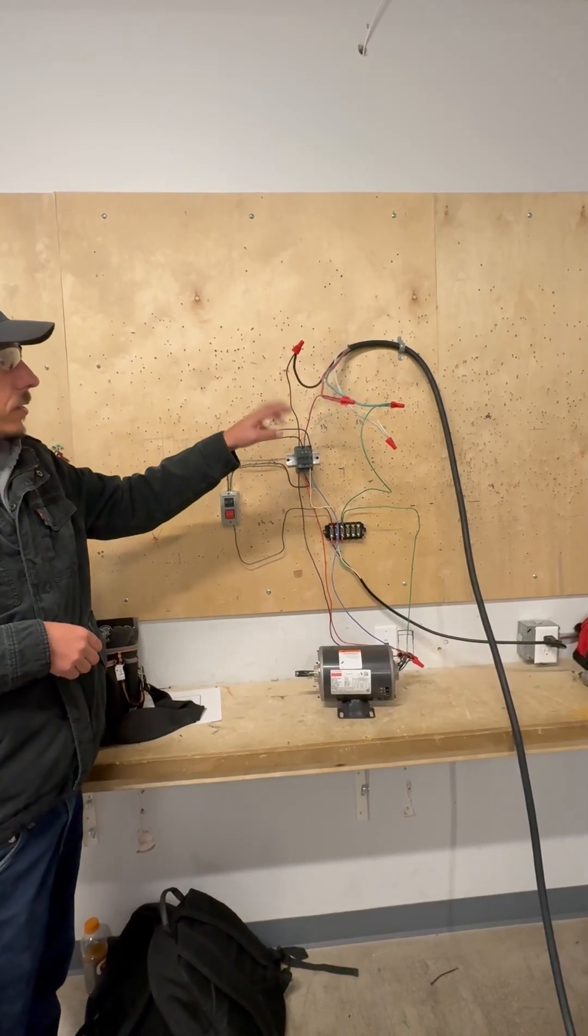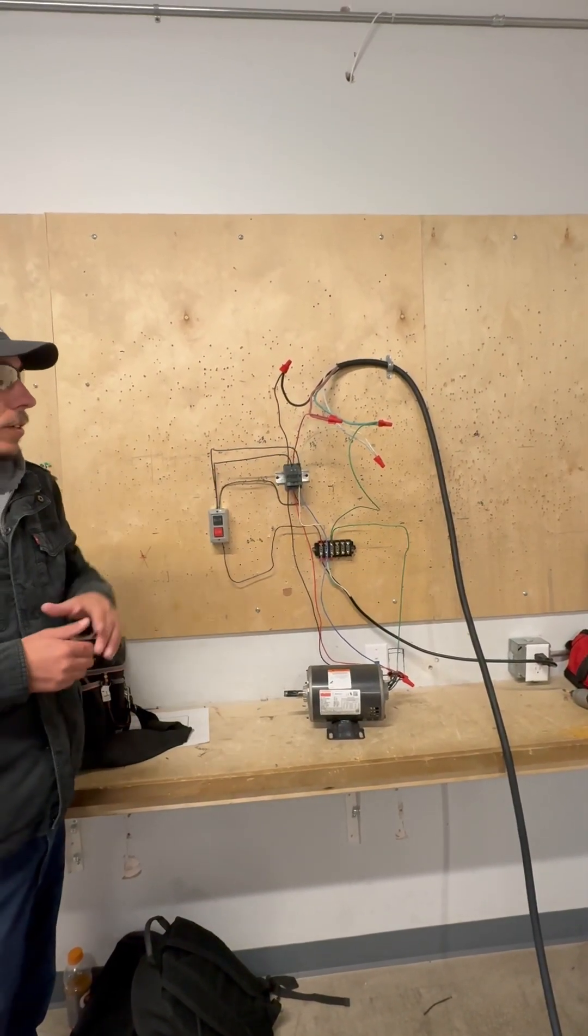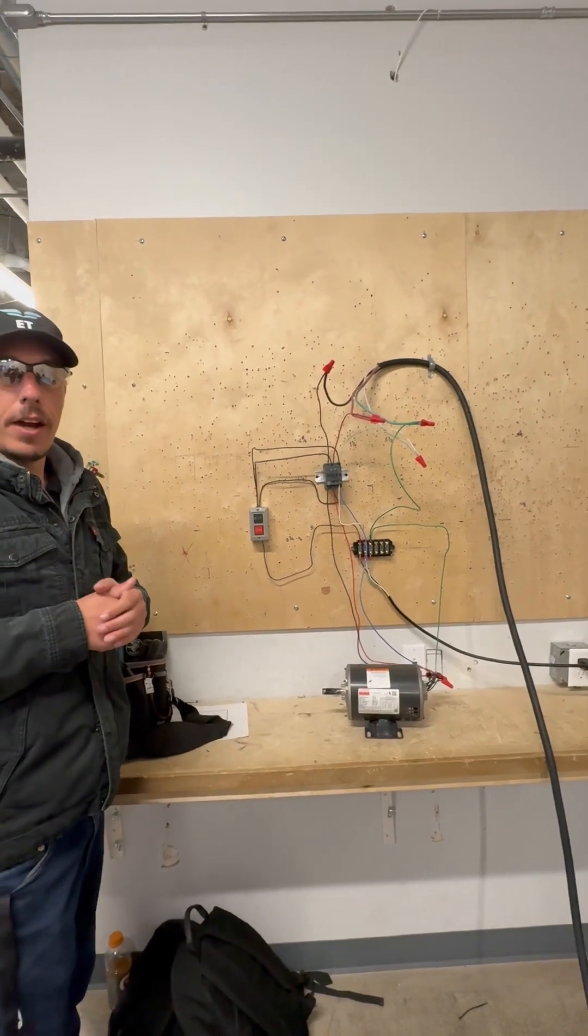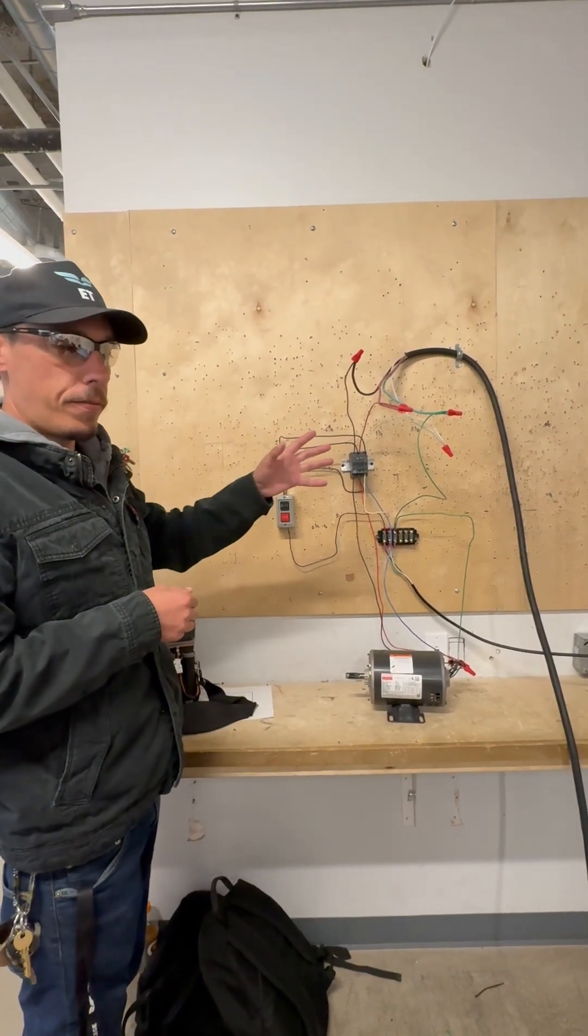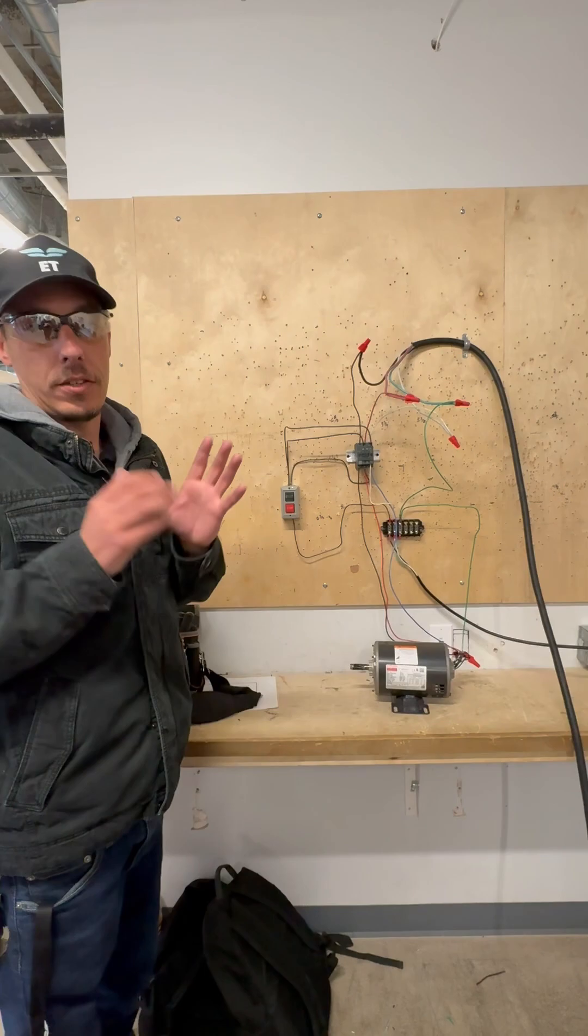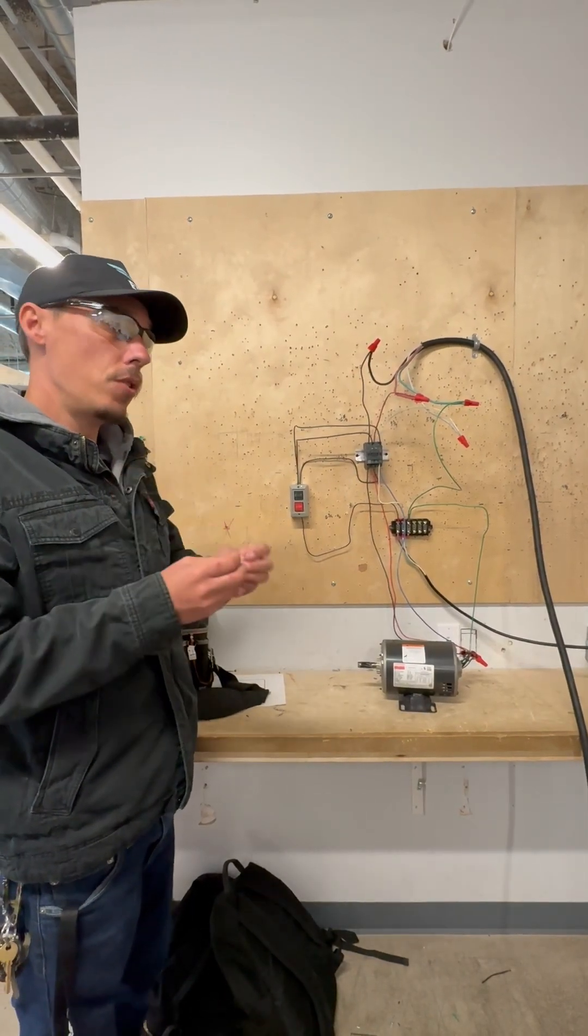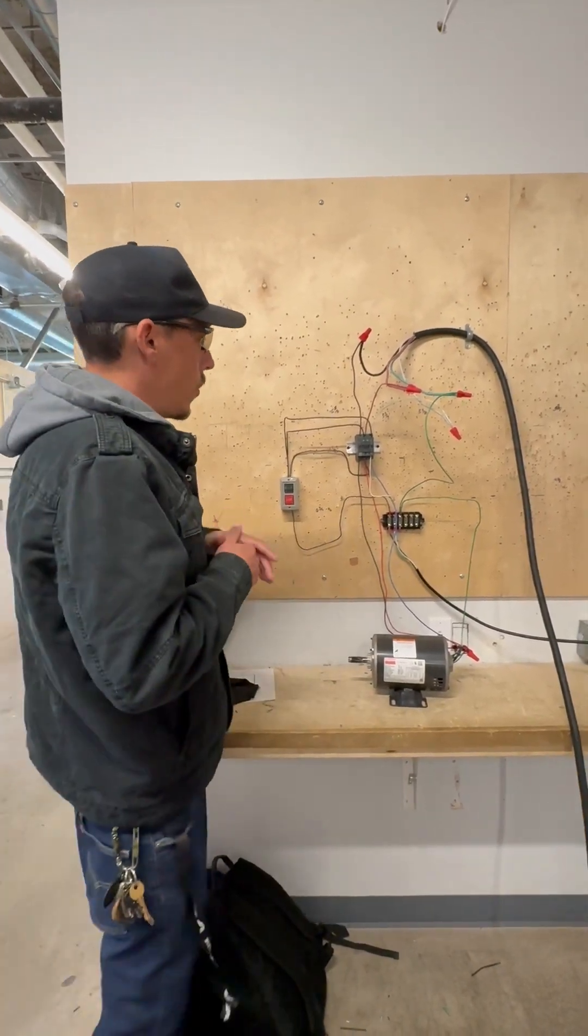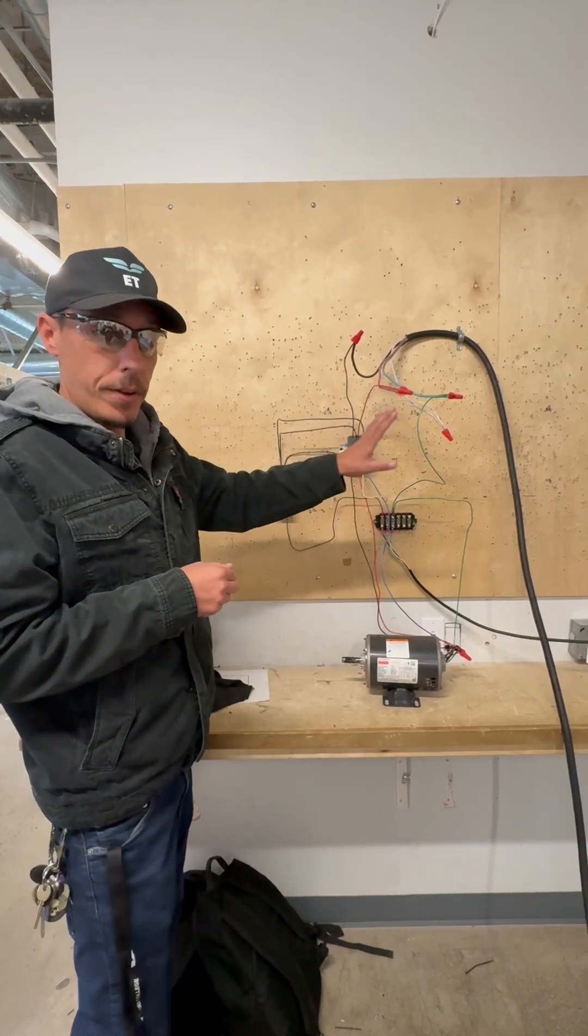If you notice the three-phase, it's black, red, white. So yes, white signifies a neutral, but in this case, three-phase, we don't need it as white. We're using the white as a hot. So in this case, that is okay for three-phase systems.